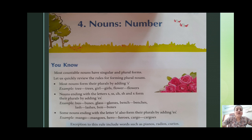Some nouns ending with the letter O also form their plurals by adding ES. ایسے nouns جن کا end O letter سے ہوتا ہے، اس کے پیچھے بھی ES لگا کے plural form بنا سکتے ہیں۔ For example, mango → mangoes, hero → heroes, cargo → cargos. Exception words include pianos, radios.